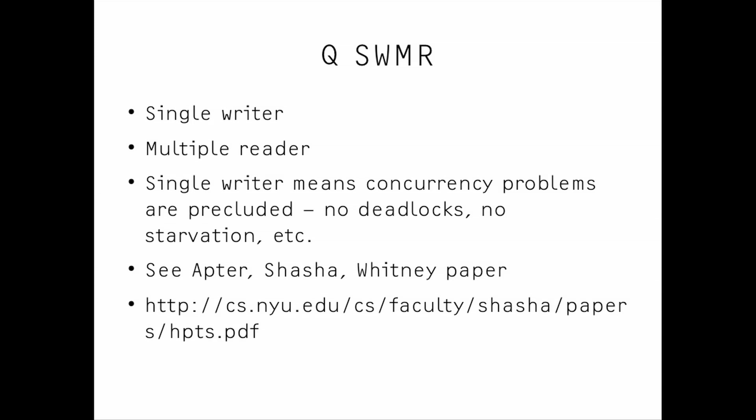Q is mostly single-threaded for writing and multi-threaded for reading. That has been true for a very, very long time. There is even a very good paper by Aptor, Shazha, and Whitney talking about why that particular architecture was chosen — because it precludes an awful lot of issues dealing with concurrency. If you've ever done any pthread-style concurrency, you know how painful it is to get anything right.